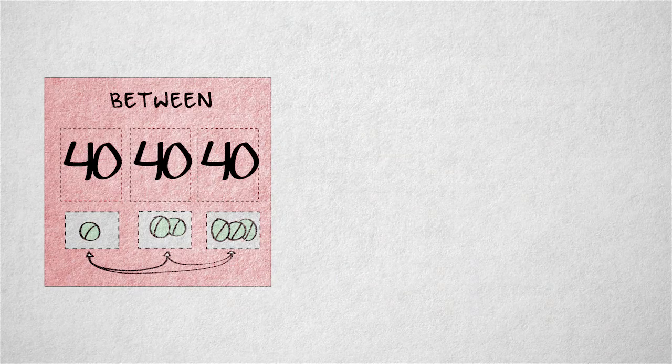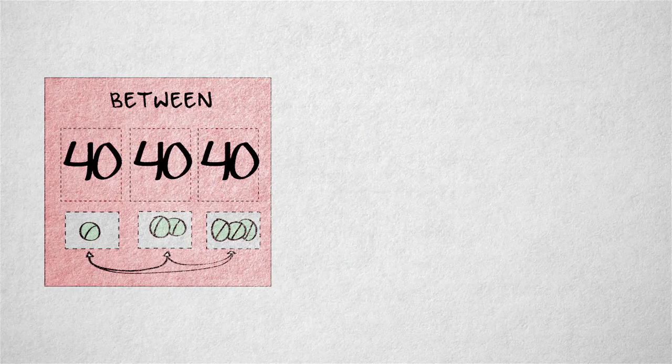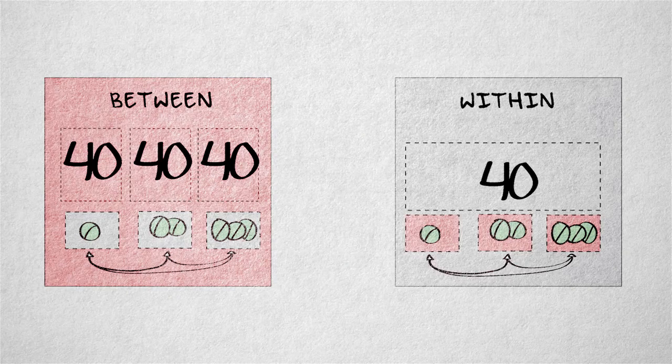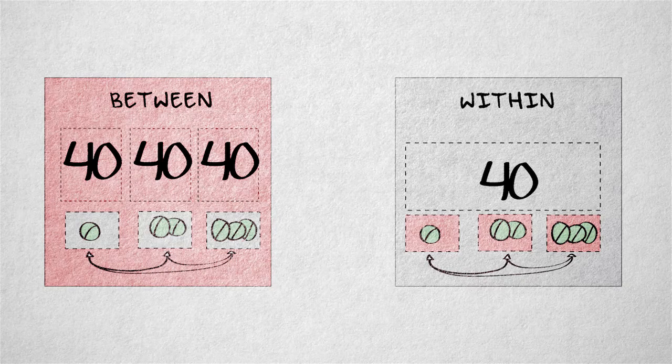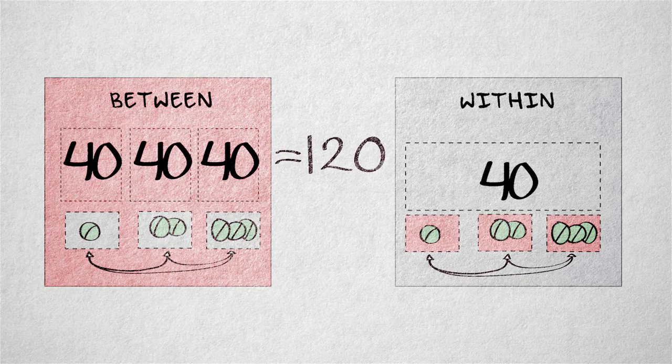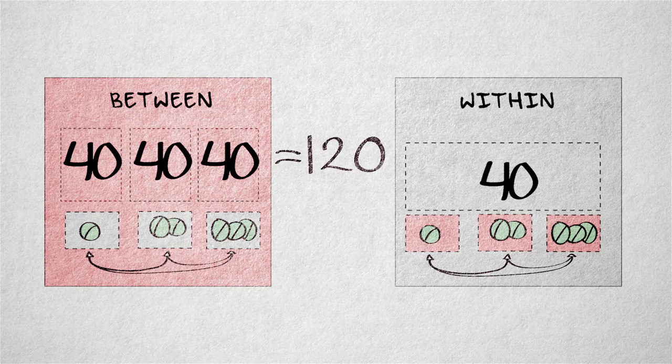If you need 40 participants in each condition, it might be easier to find just 40 people who are willing to participate for three weeks than it is to find 120 people willing to participate for one week.